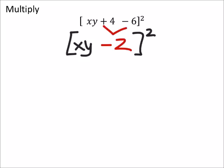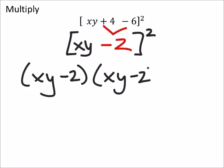Now we could multiply these out and take xy minus 2 and multiply it by xy minus 2, but that would be a little redundant because we've already done some of those types of problems. So I'm going to use the rule on this one.